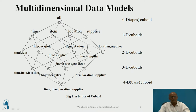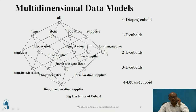At one-dimensional, these fields are shown: time, item, location, and supplier. At two-dimensional, we consider combinations such as time and item, or time and location — those two attributes are shown at the two-dimensional level. Similarly, time and supplier, and location and supplier are shown as item-location and location-supplier at the two-dimensional level.